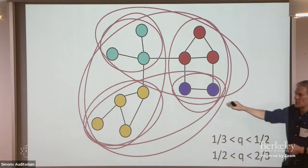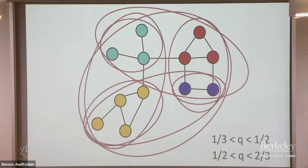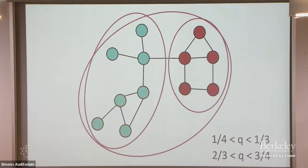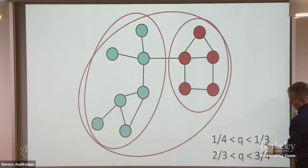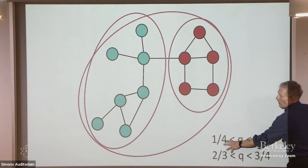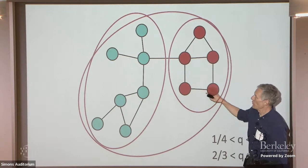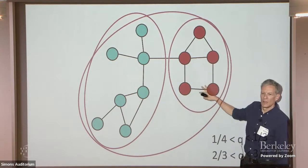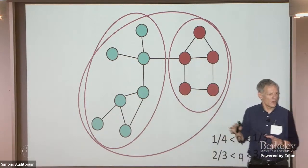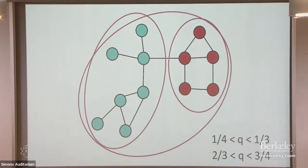Different behaviors give different splits of the graph. A 40% threshold game is different from one with a threshold below one quarter. This is a better technology: if at least 25% of my friends take it, I'm willing to take it. That ends up with larger equilibria and a different split of the graph. Depending on what behavior you have, you can have different possibilities for how the graph splits up.